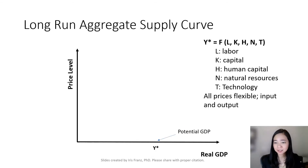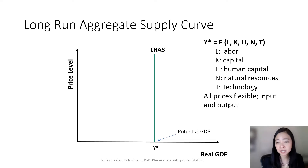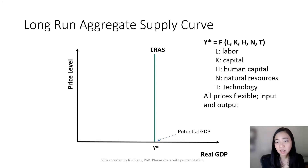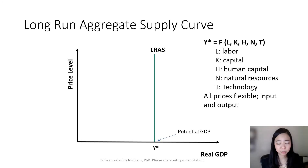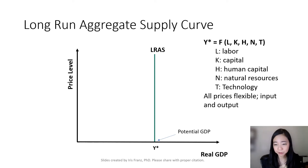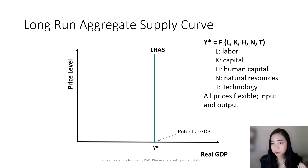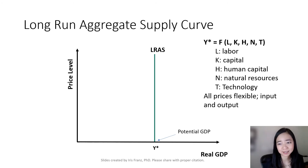Here is our long run aggregate supply curve. It is a vertical line. On the vertical axis, you see the price level. On the horizontal axis, you see the real GDP. This diagram tells you our long run output is not affected by the price level, but rather it is a function of labor, capital, human capital, natural resources, and technology. The more of these inputs — labor, capital, human capital — you have, the higher the output. But the output in the long run will not be affected by the price level.